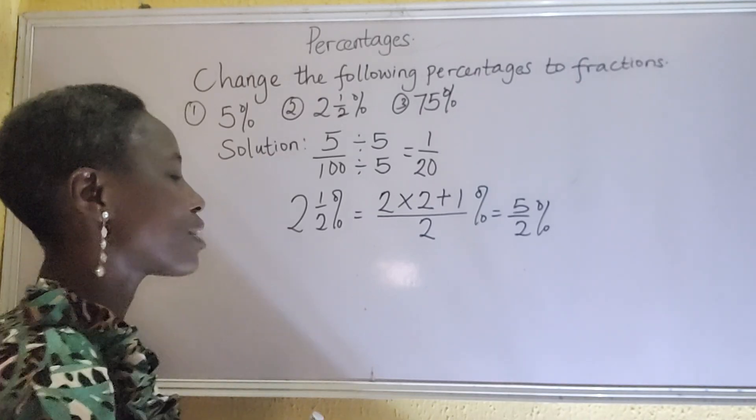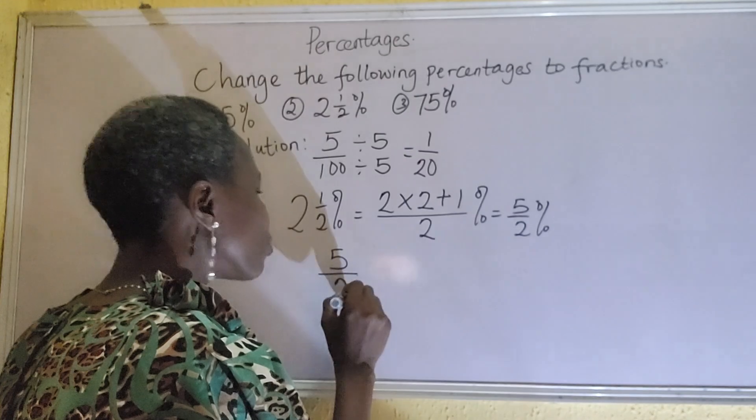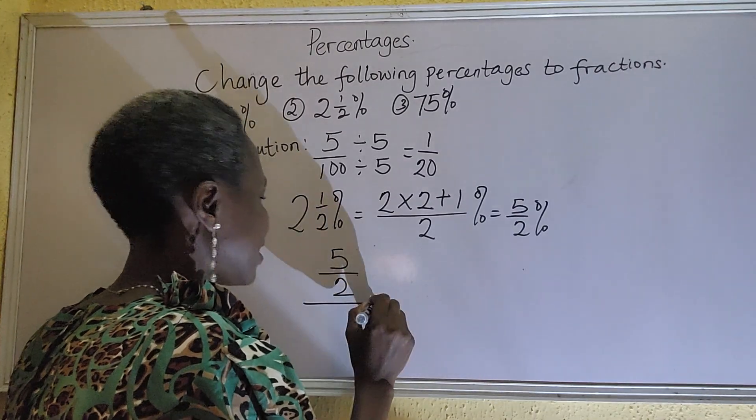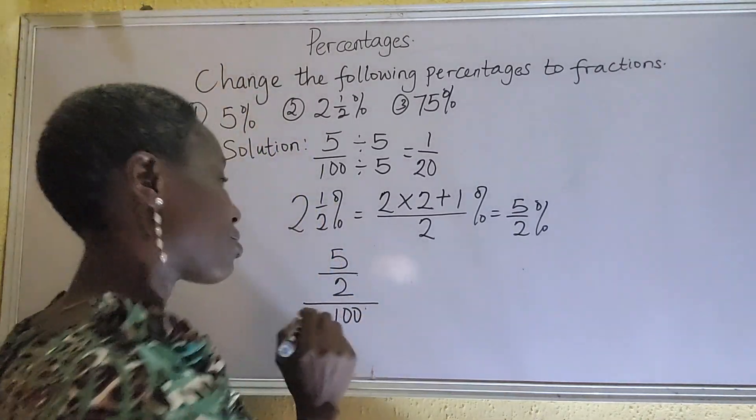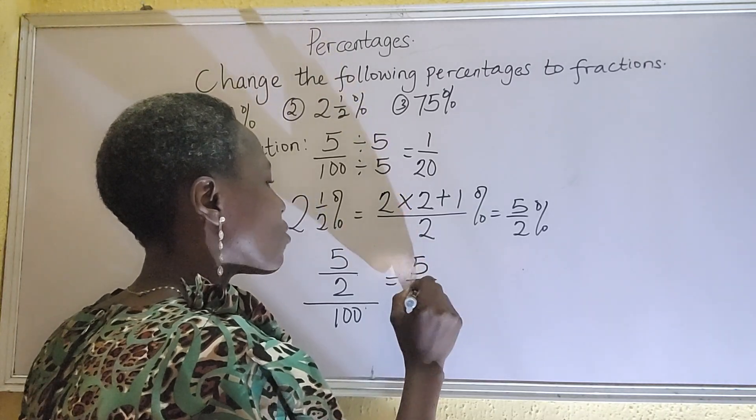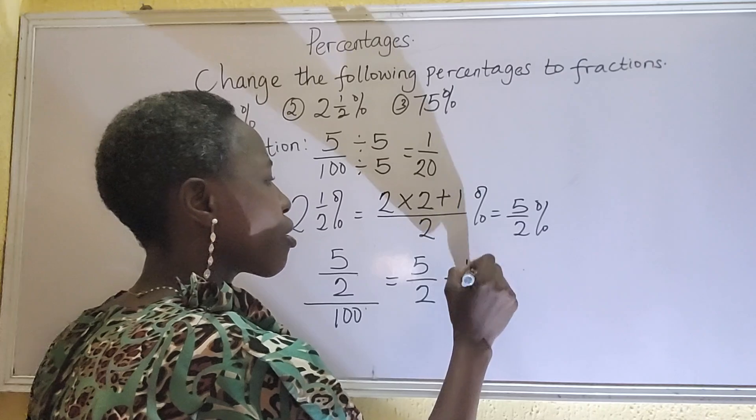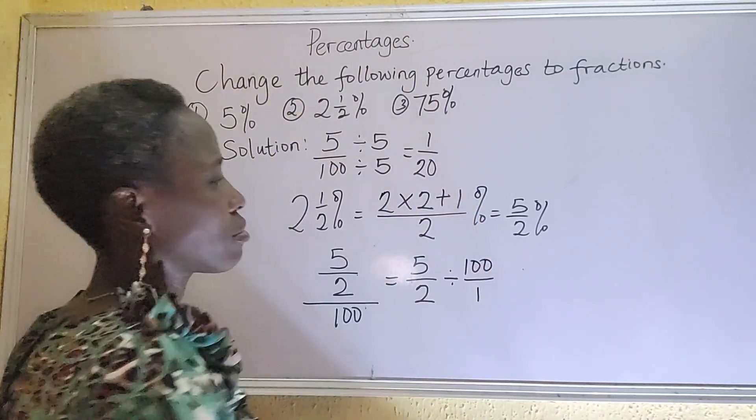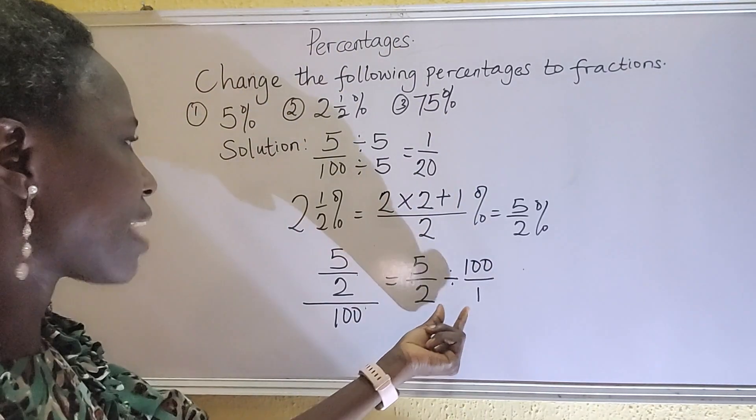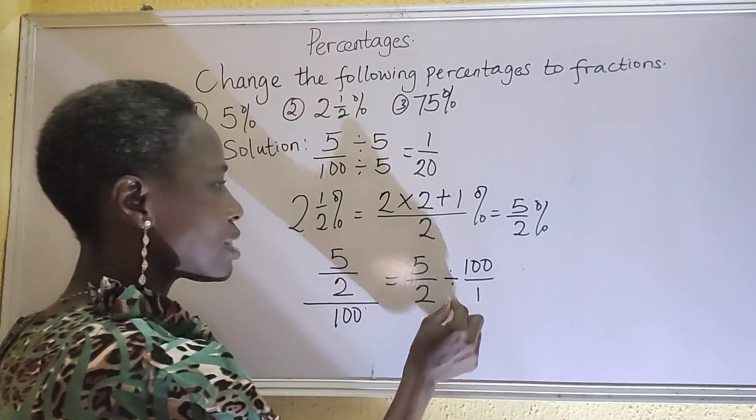So 5 over 2 percent means 5 over 2 divided by 100. That's what we've been doing. So we'll have it like this: 5 over 2, to write it properly, you know this also division sign, by 100 over 1. If you have this at this stage you are already close to getting it.